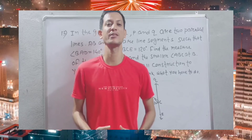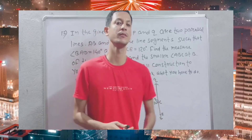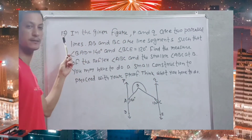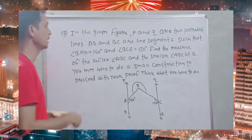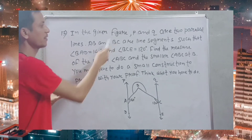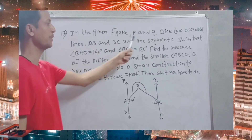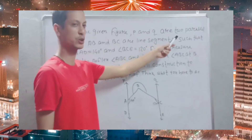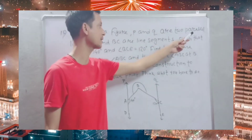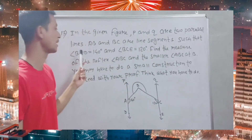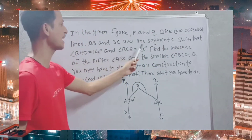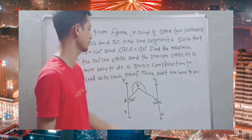Welcome back to my channel. Question number 13. In the given figure, P and Q are two parallel lines. A, B and B, C are line segments.